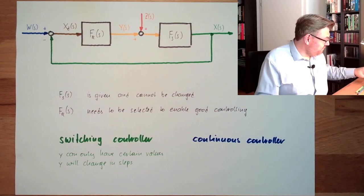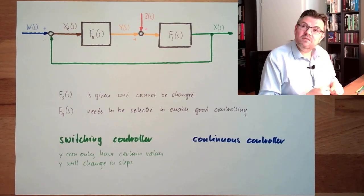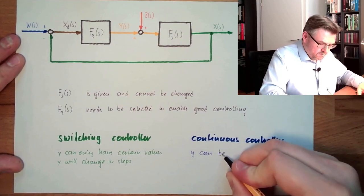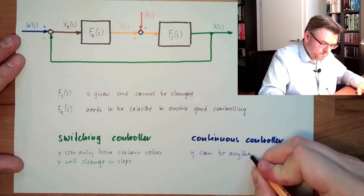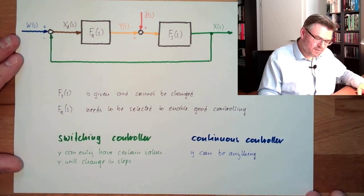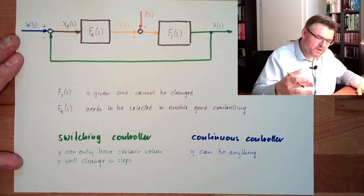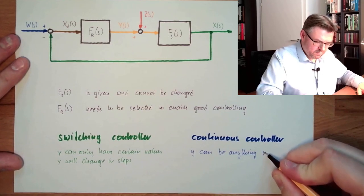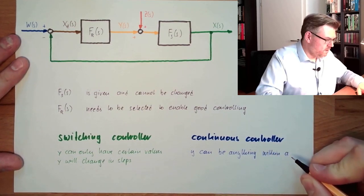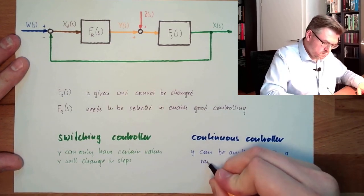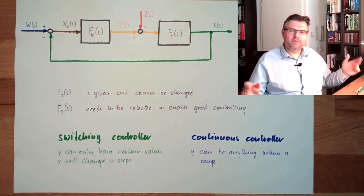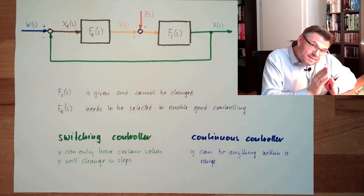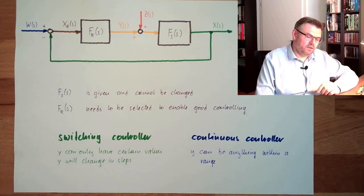If we have values in between, then we have a continuous controller, because here y can be anything — well, that's not entirely true; there are minimum and maximum values, but within that range it can be any value. A tiny change is also possible. That's the continuous controller: y can be anything within the range.